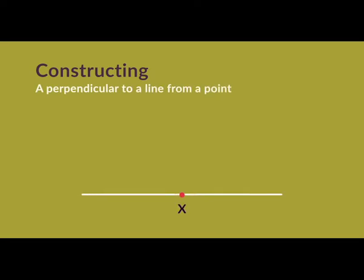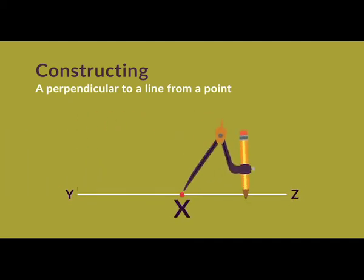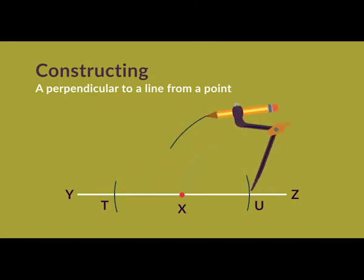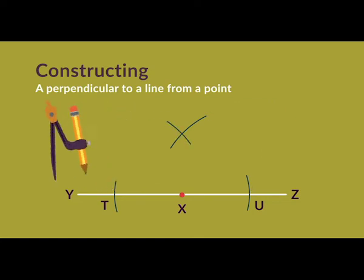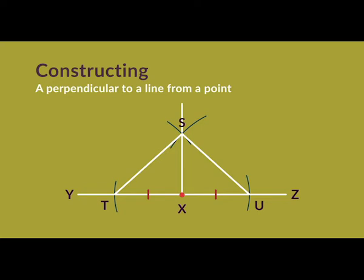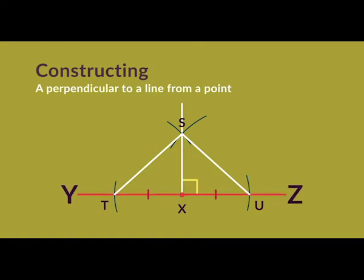If you have a point X on a line YZ, you can construct the perpendicular as follows. Step 1: label the point. Step 2: with the compass point at X, draw an arc on either side of X on the line. Step 3: make the compass wider, place the point on each intersection of the arc with the line, and draw arcs above X so they intersect. Step 4: join point X to the intersection of the arcs. This works because we have constructed two congruent triangles — TX equals XU because the same radius was used with X as centre. We created the perpendicular by making a line segment on YZ and bisecting it.